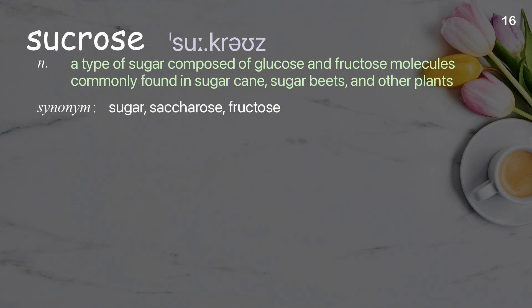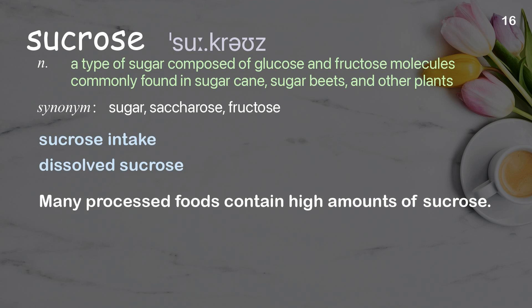Sucrose. A type of sugar composed of glucose and fructose molecules, commonly found in sugar cane, sugar beets, and other plants. Examples: sucrose intake, dissolved sucrose. Many processed foods contain high amounts of sucrose.